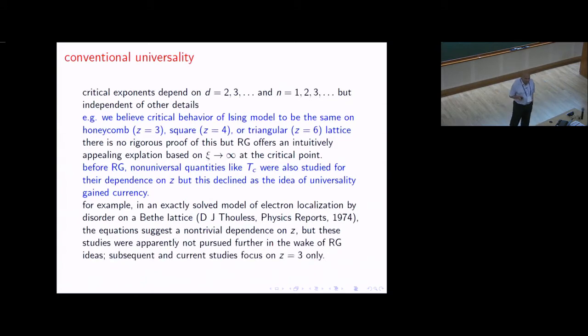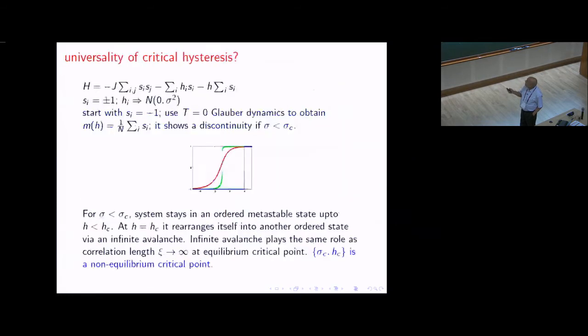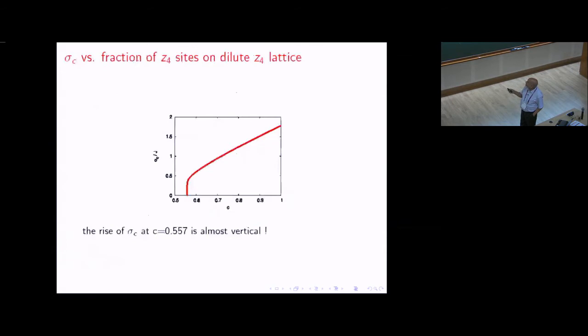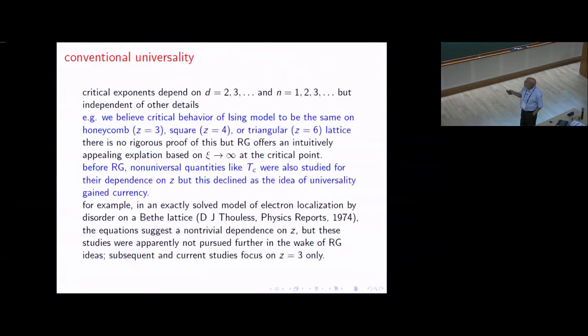This idea of universality is nearly 50 years old, dating back to when renormalization group theory of critical phenomena was emerging. In simplest form, it says that for classical n vector spins on a d dimensional lattice with nearest neighbor interactions, the critical exponents only depend upon n and d and nothing else.